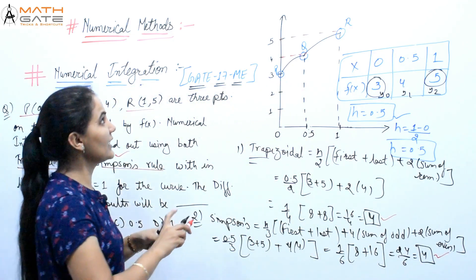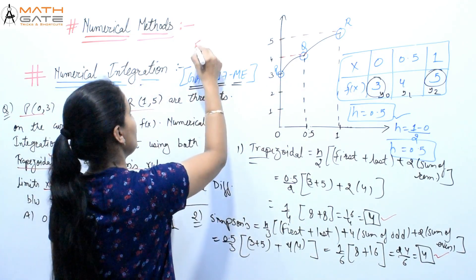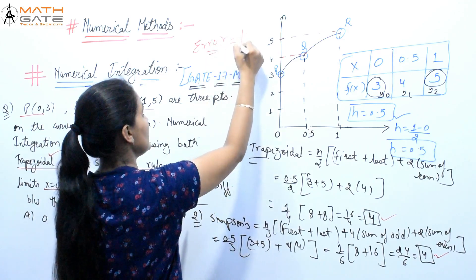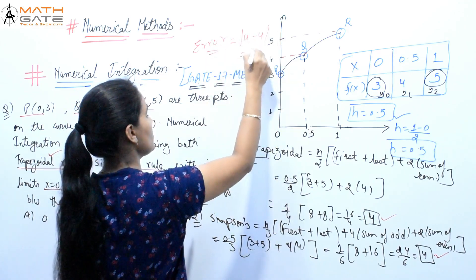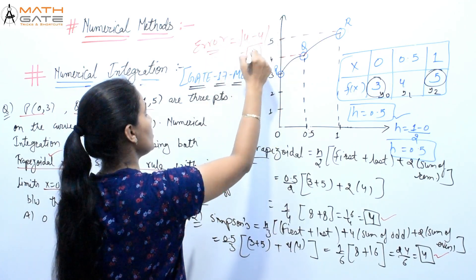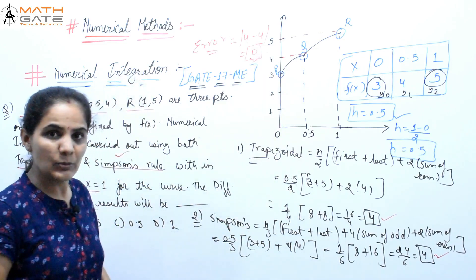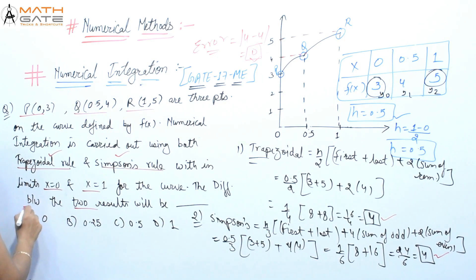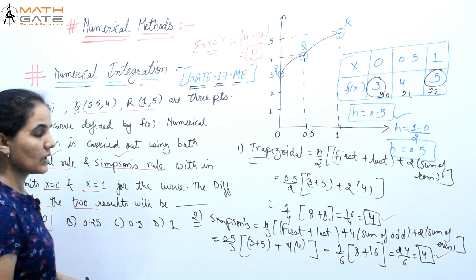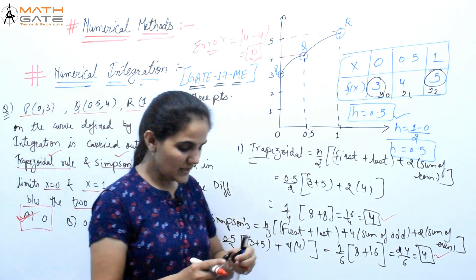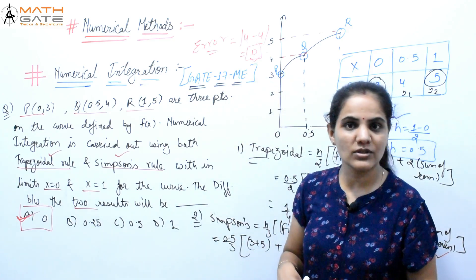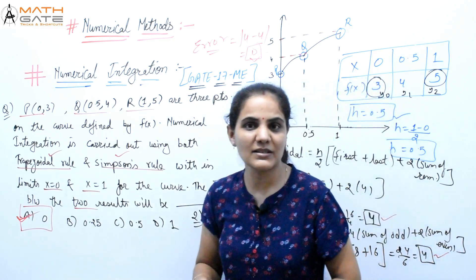So when we talk about the error, what is the error here? Error = Trapezoidal value − Simpson's value = 4 − 4 = 0. Because both methods give the same value, the answer is 0, which is option A. This is a good question — both numerical integration methods yield identical results here.